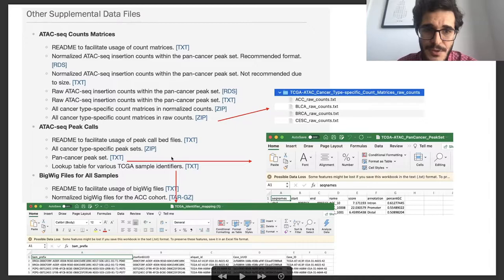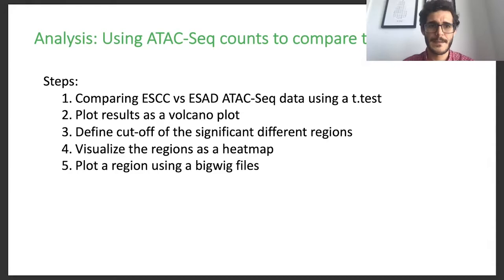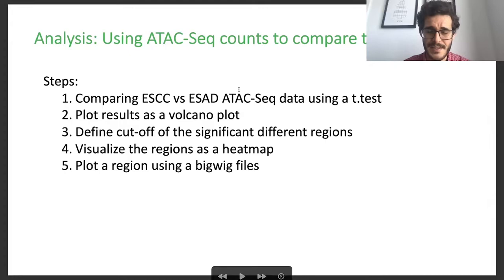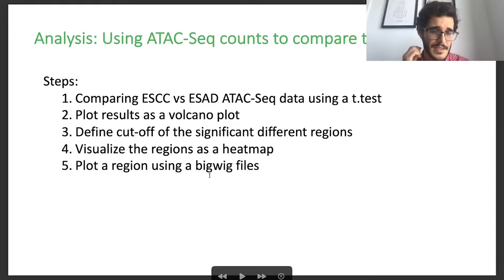The last data available is the bigwig files — for each replicate you have a bigwig file. That's pretty much what data we have. For the workshop overview: first we're comparing ESCC versus ESAD using a t-test, plotting as a volcano plot, and defining which regions are significant using a cutoff for both the t-test p-value and the estimate. Then we visualize as a heat map, and there's also code for visualizing the bigwig files.